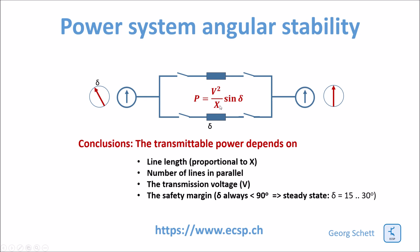You see, for example, that the impedance, this X, is equal to the parallel connection of these two impedances here. So if you have two parallel lines, you can transmit double the power than if you have only one connection.